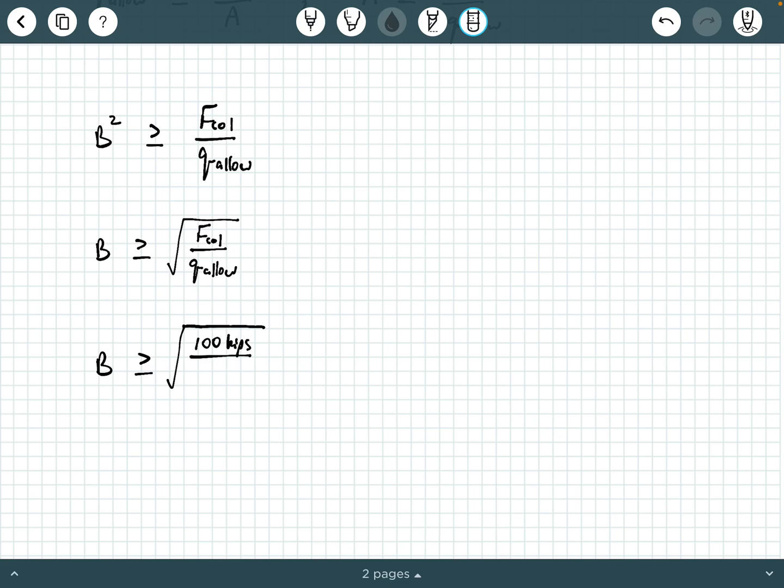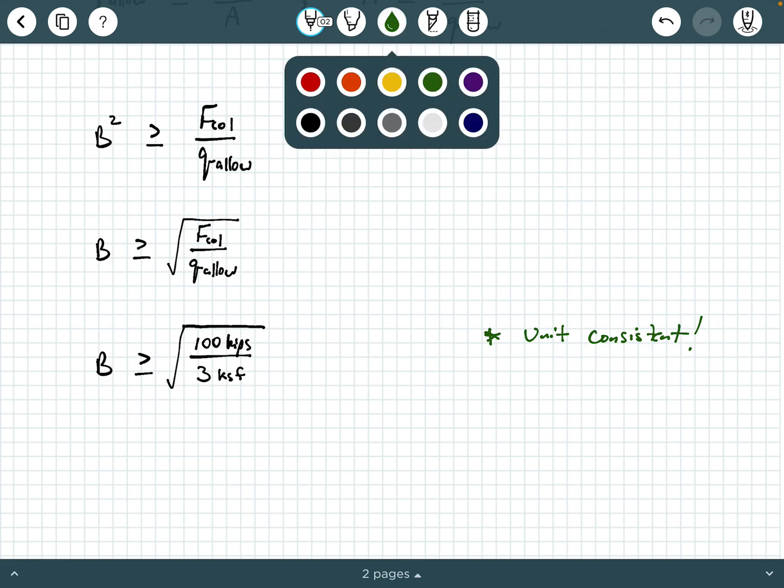The answer is actually no, because your units must be consistent. So you should not put the 3,000 here. You should convert the 3,000 PSF to 3 KSF, kips per square foot, because you're dealing with a column load of kips here. Another way of handling it, you could keep the 3,000 PSF, but convert the column force to 100,000 pounds. So be consistent with your units. We'll make a little note here. Make sure you are unit consistent. That's very important. Otherwise, you will get the wrong answer.